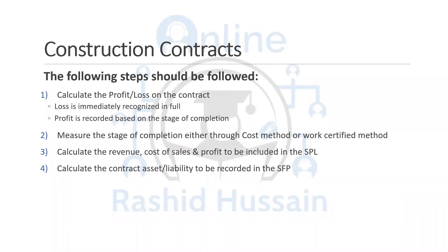Within IFRS 15, as I told you, we have another standard which was merged earlier, and that was the construction contract. Within IFRS 15, there are two standards: the first one was IAS 18, which used to be the revenue recognition, and IAS 11, the construction contracts. These two standards were merged, and the new standard is known as IFRS 15.